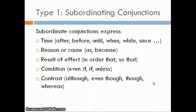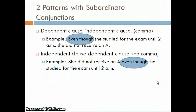There are many subordinate conjunctions. We use them to show the relationship between ideas in two clauses. They can express time — after, before, until, when, while, since; reason or cause — as, because; result or effect — in order that, so that; condition — even if, if, unless; and contrast — although, even though, though, whereas. These are just some examples.